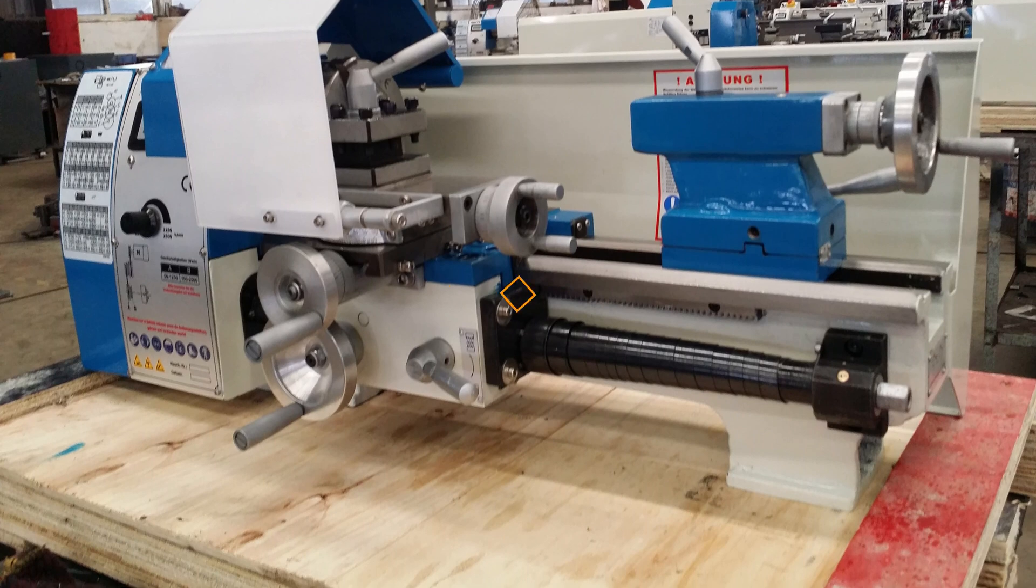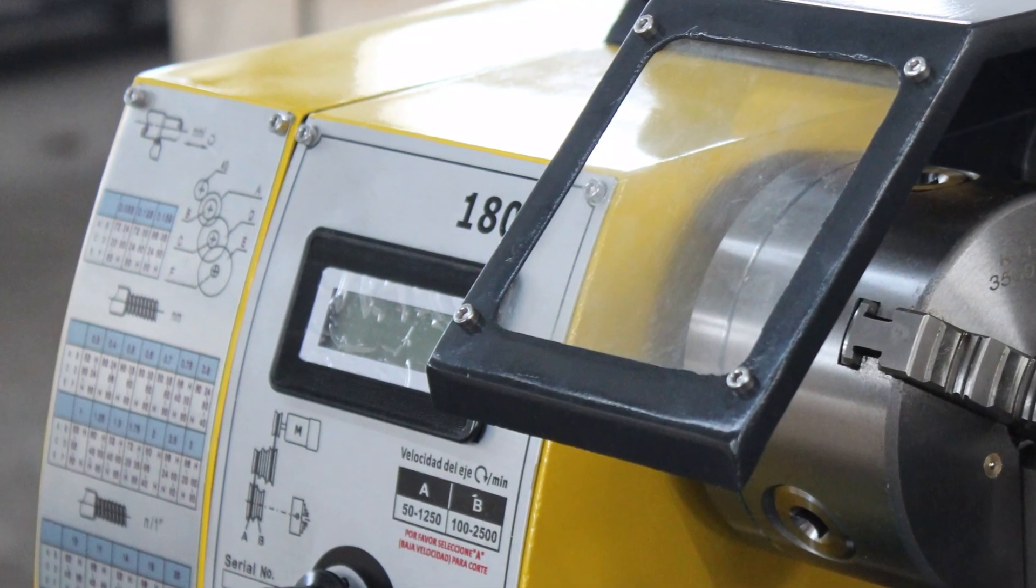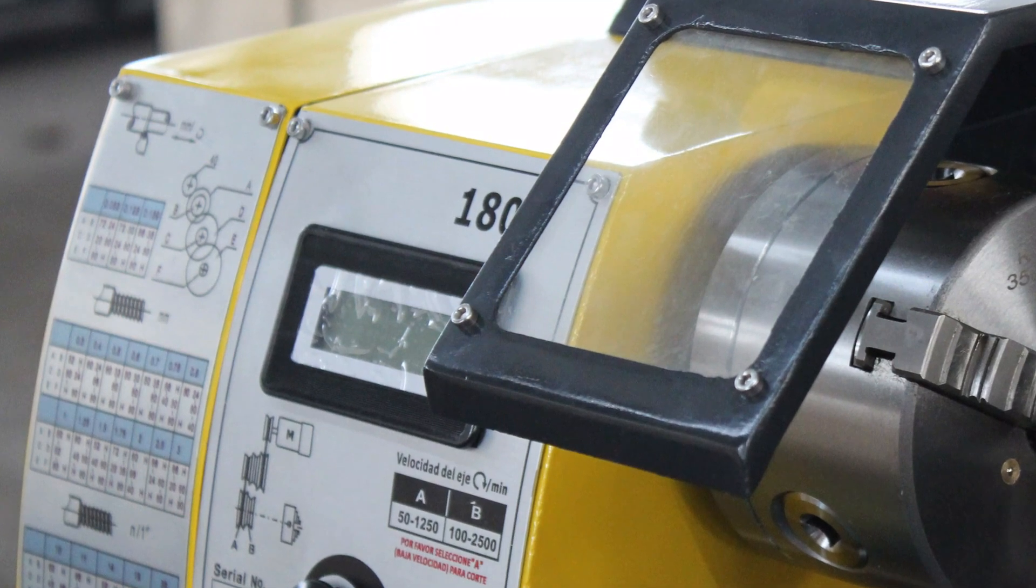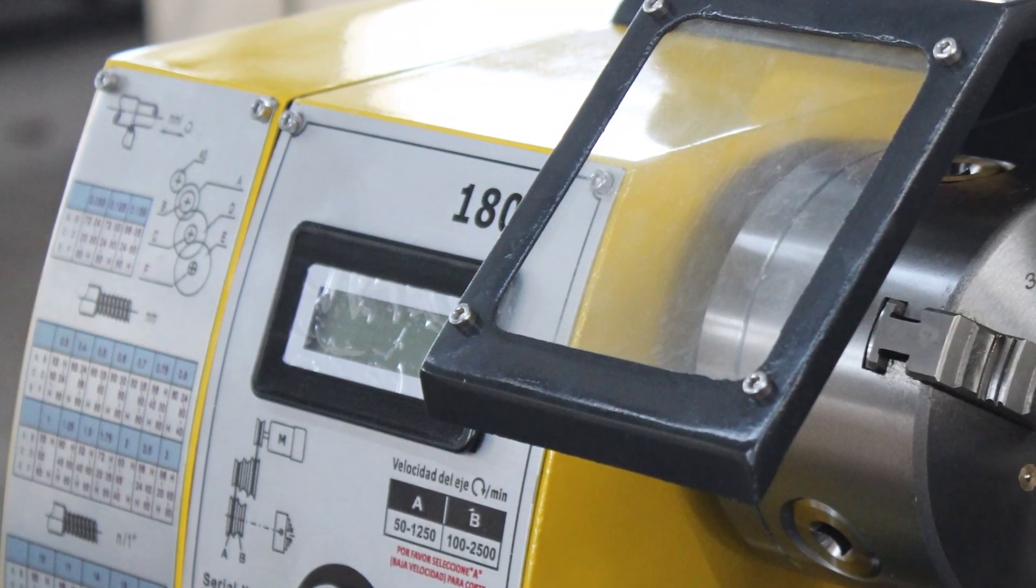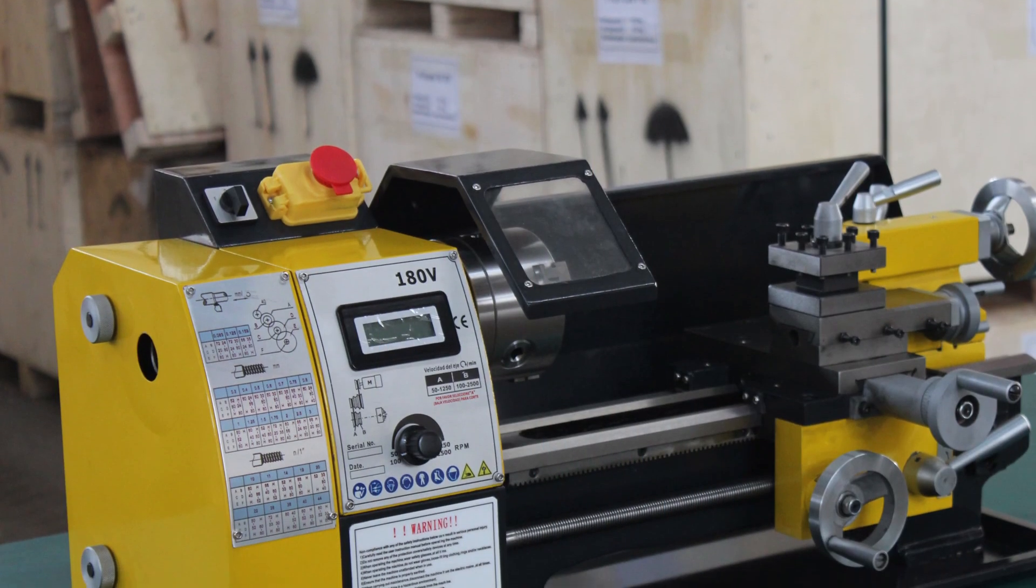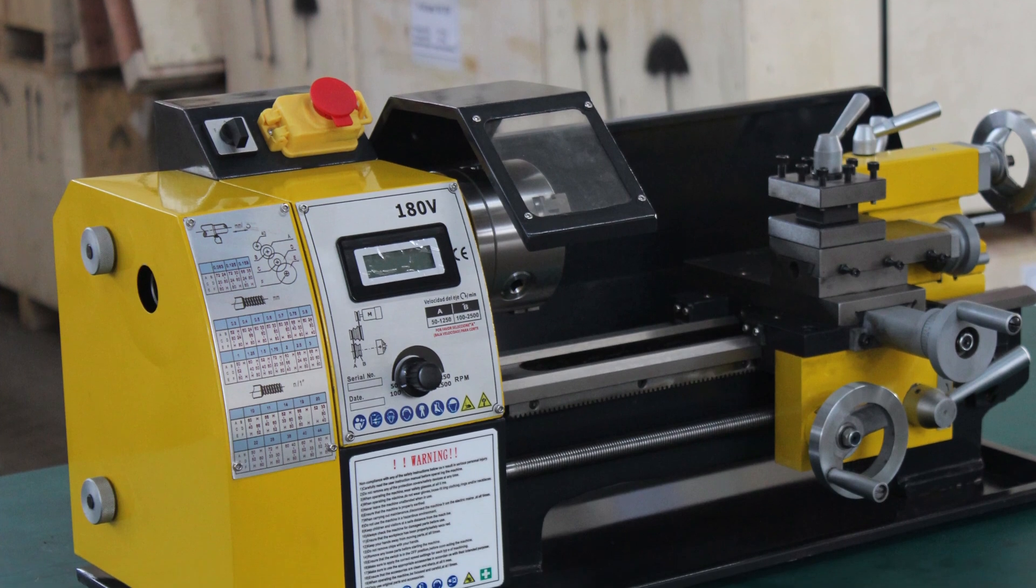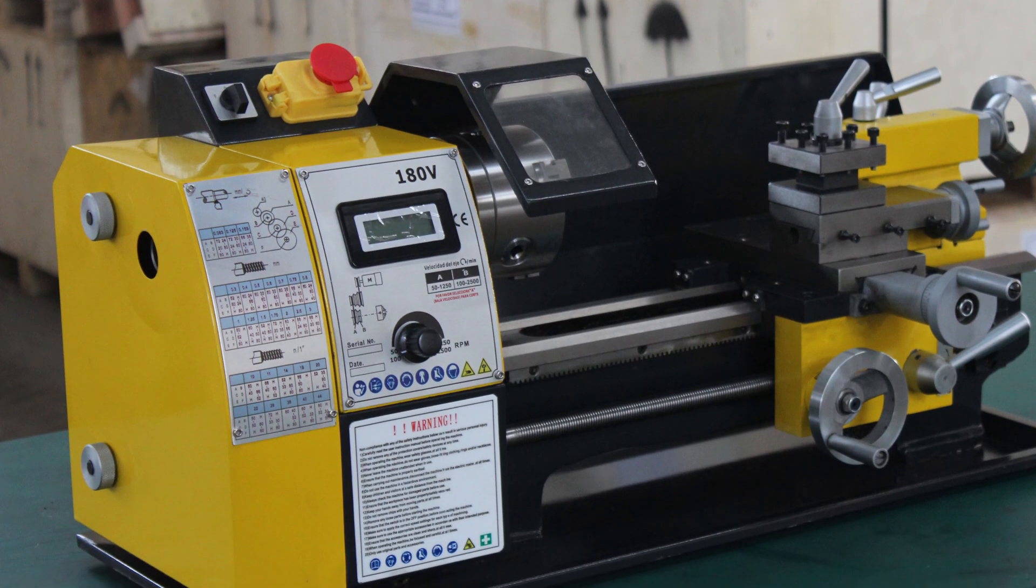Its turning diameter is impressive, with a maximum of 180mm for the 300mm between centers model and 210mm for the 400mm between centers model. The Lathe's 100mm wide bed ensures accuracy and precision, while its MT3 spindle taper and bore size allow for versatile tool holding.